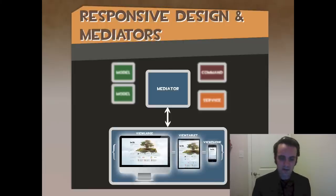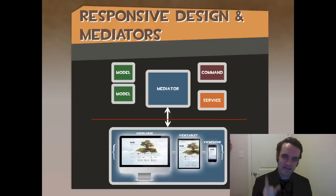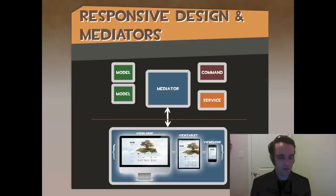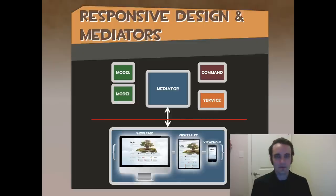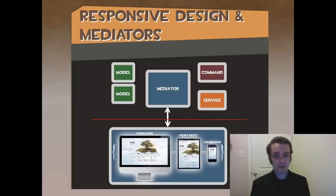Regardless of what size you're targeting, the mediator can usually stay the same — one mediator for multiple views. The models, commands, and services in the background do not change. Looking at the red line here, above it is hopefully the 60% you're going to reuse whether you build for Nook, Kindle, all the Android smartphones, Android tablets, iPhone, iPad, or iPod. All that business logic above the red line should stay the same — you're hitting the same services, commands, models, and API for data. It's just the view that's different.